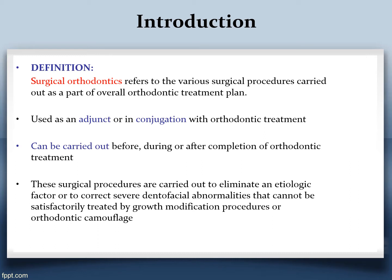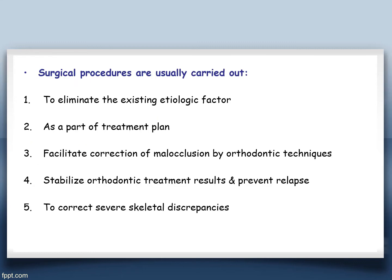It involves fixed orthodontics as well — it doesn't mean the patient has to go for surgery immediately. It is a step-by-step procedure when you think the patient is a surgical case. It can be used as an adjunct or in conjunction with orthodontic treatment, and can be carried out before, during, or after completion of orthodontic treatment depending upon the situation. These surgical procedures are carried out to remove or eliminate an etiological factor or to correct severe deformities in the dentofacial region that cannot be treated with growth modification or orthodontic camouflage.